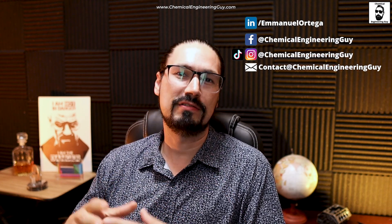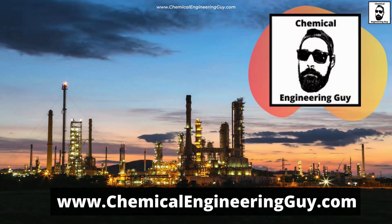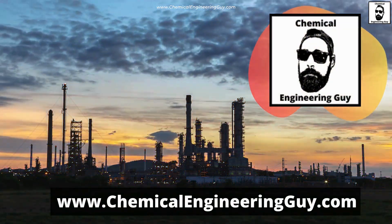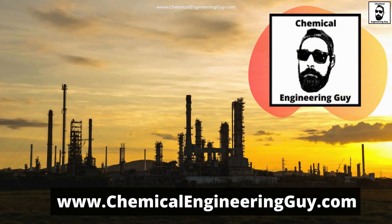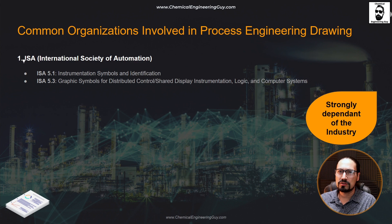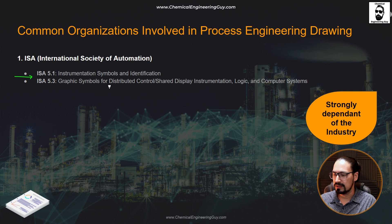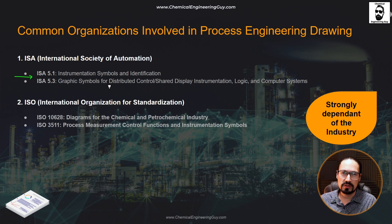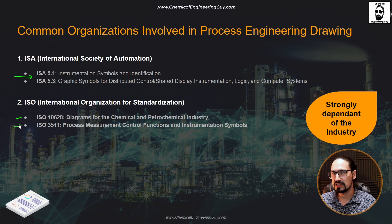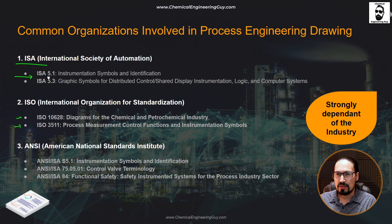What are the common organizations involved in the standardization of process engineering drawings? The first one is the ISA, International Society of Automation, with their 5.1 and 5.3 documents. The ISO is also known for their standardization of drawings, so you can check those standards as well. But the top standard is still the ISA.